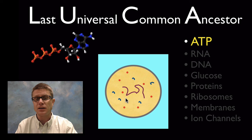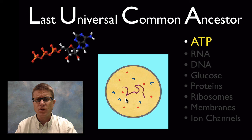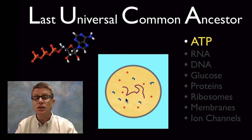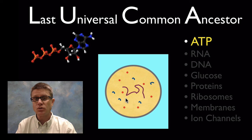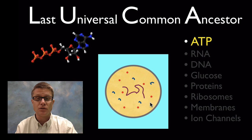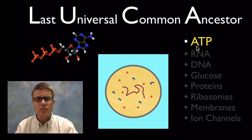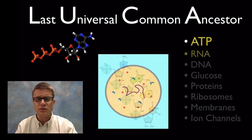LUCA was a simplified cell. Scientists concluded it had all those properties because those things are found in all cells on our planet — not only us, but also prokaryotic cells and archaea. We know that first organism used ATP for its energy because ATP is found in all cells.